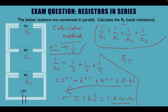Let's recap. We read the question: the below resistors are connected in parallel — calculate the resistance total. We wrote our formula: 1 over RT equals 1 over R1 plus 1 over R2 plus 1 over R3. For the calculator method, look for one of two buttons: x to the minus 1 or 1 over x, which is the reciprocal function on your calculator.